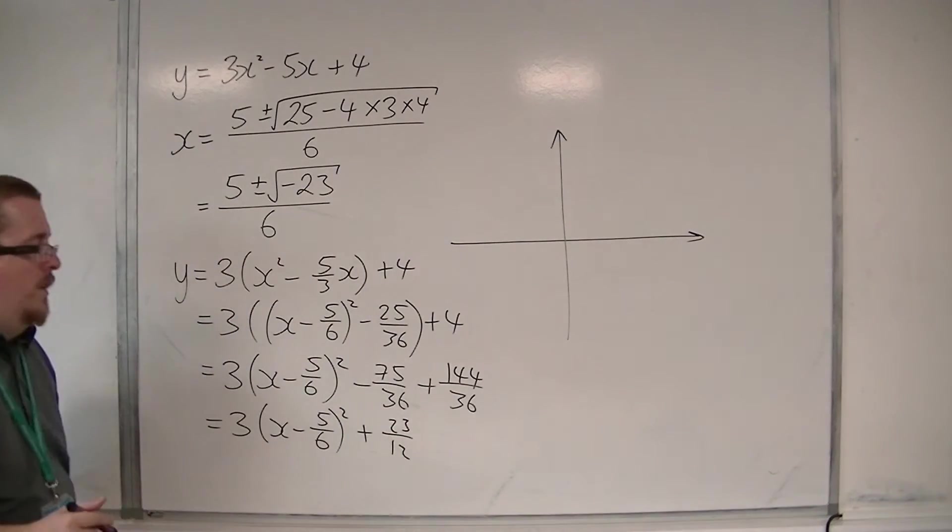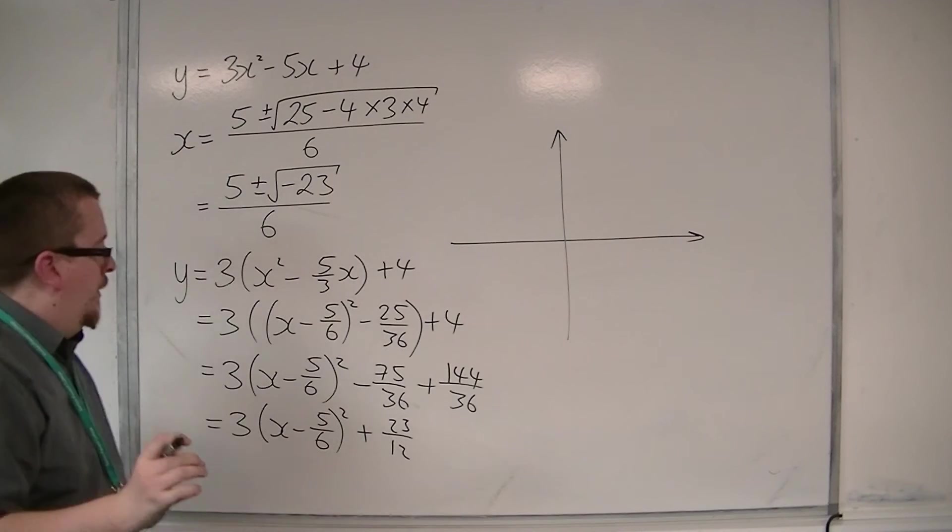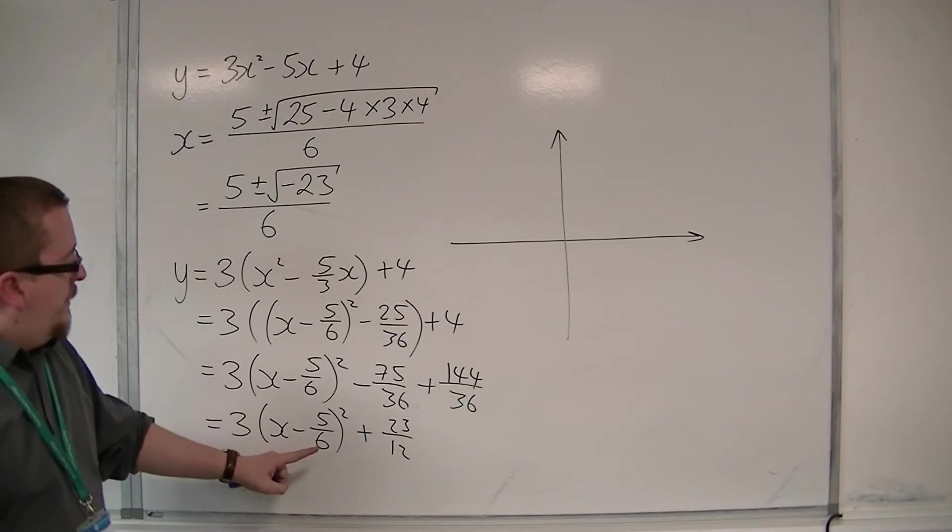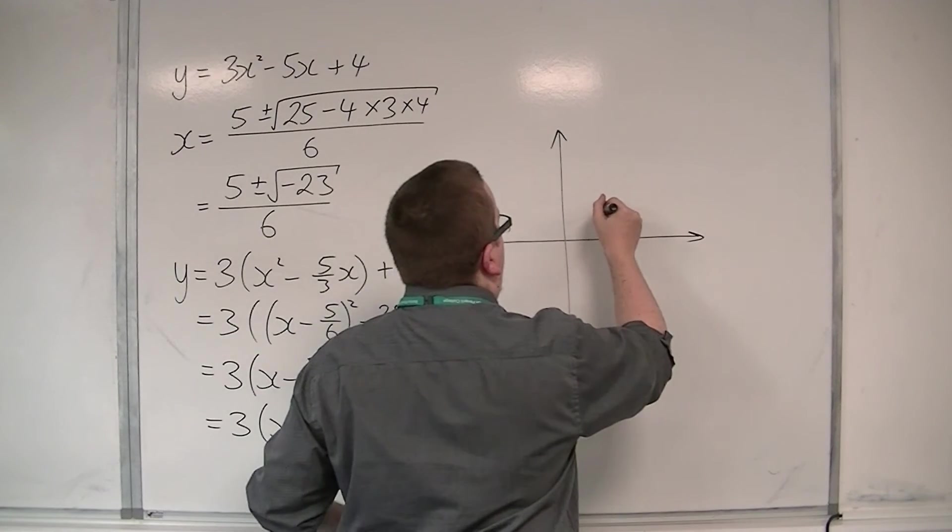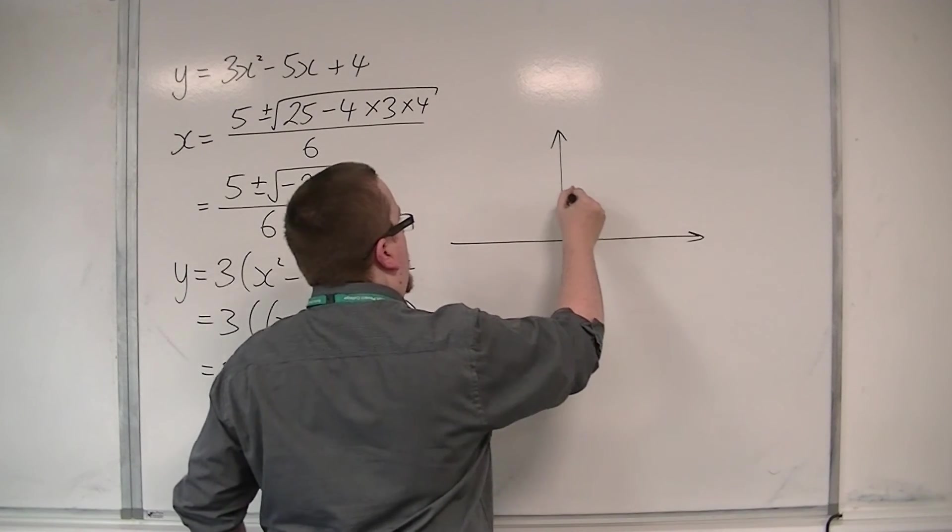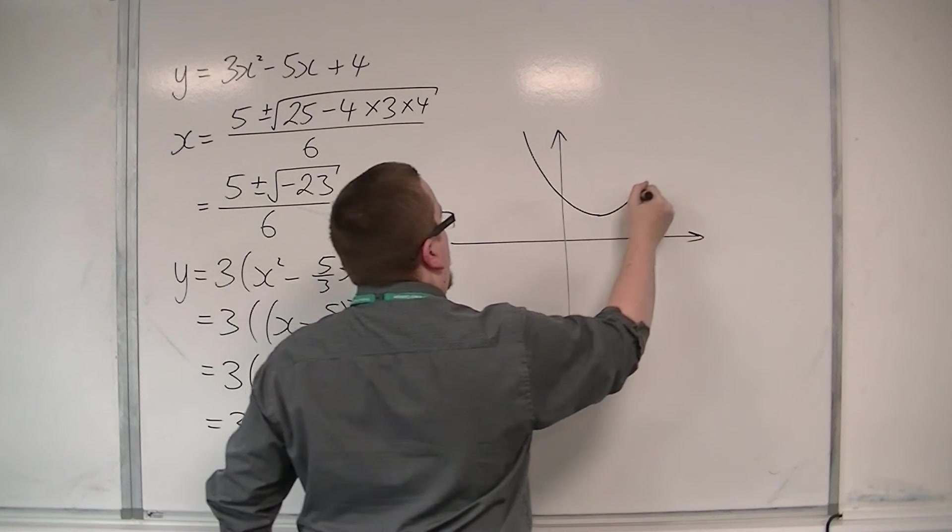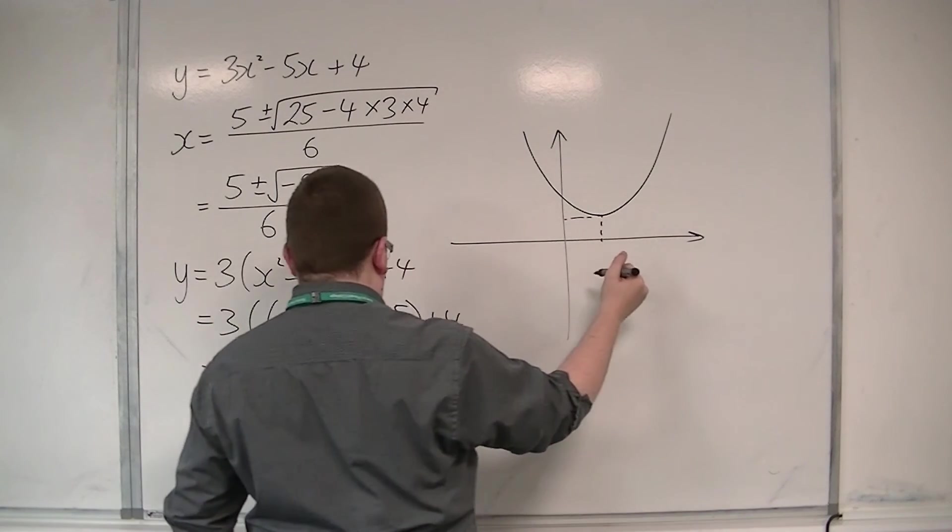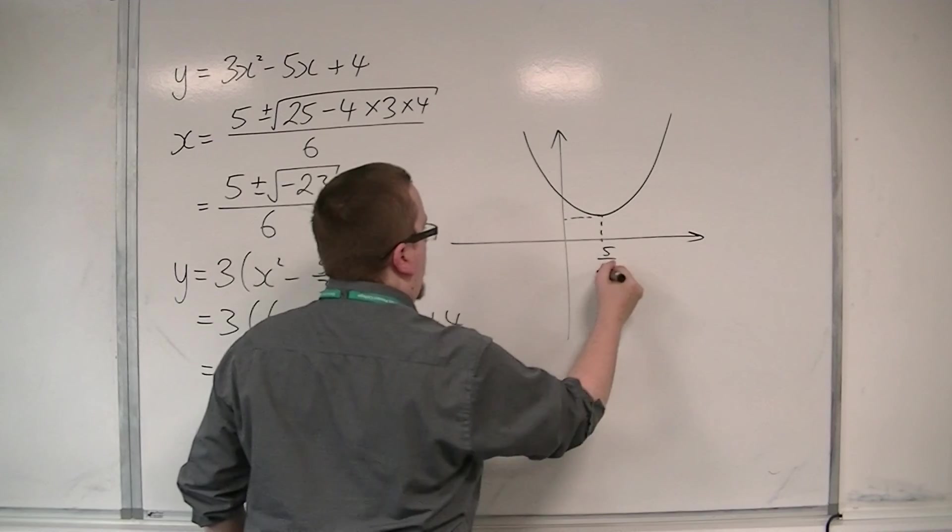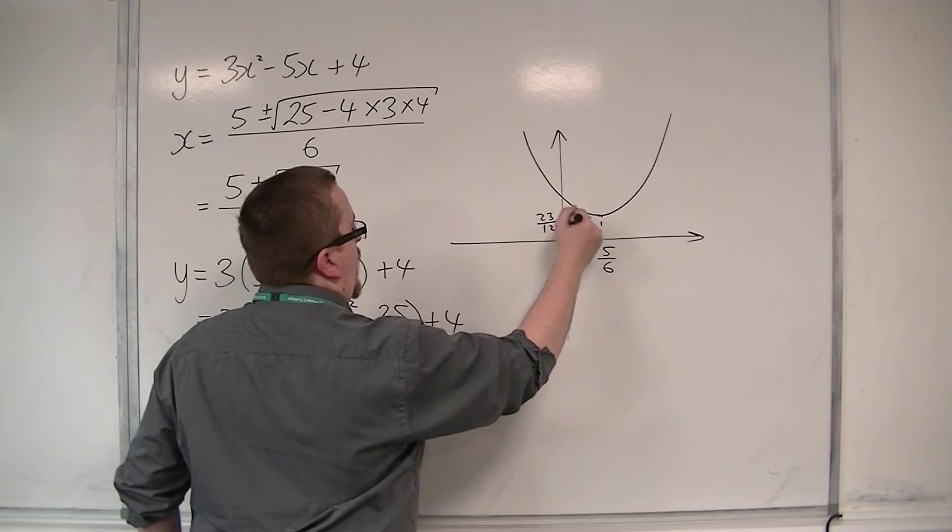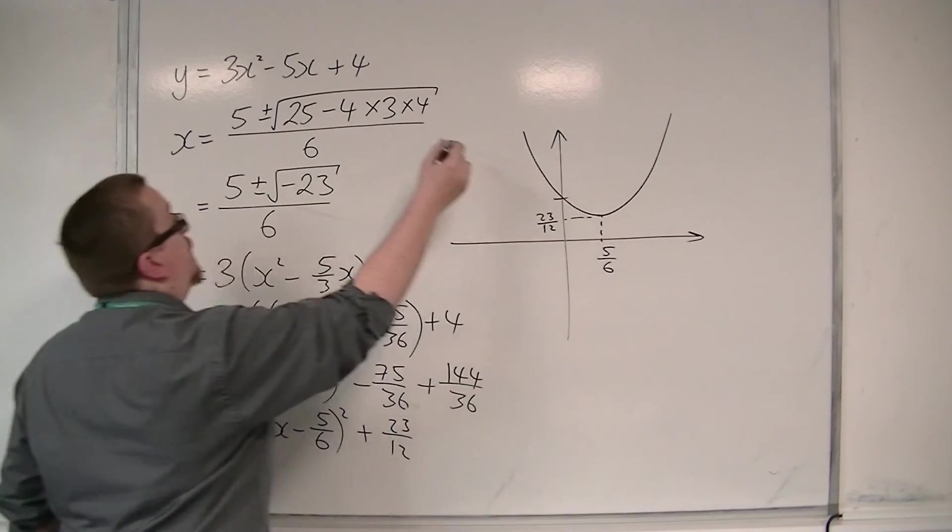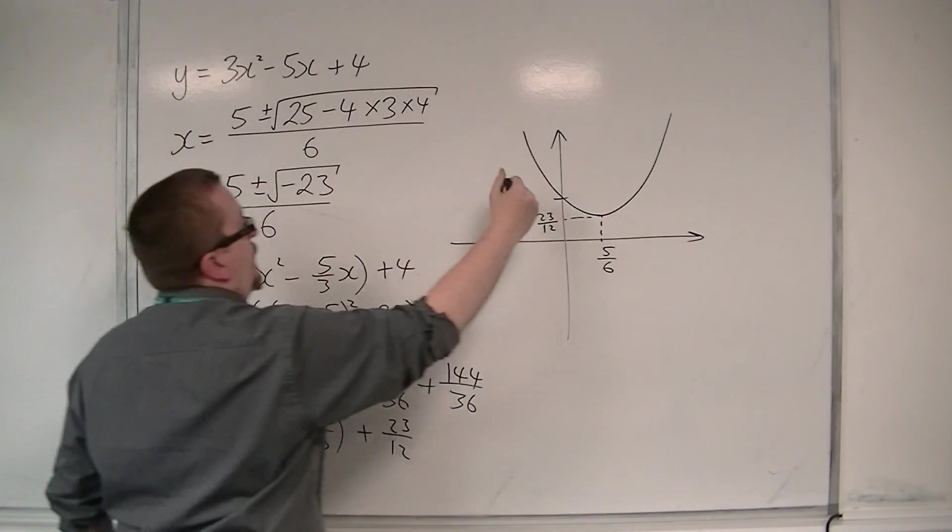And so the coordinates of the vertex is at 5 sixths, 23 twelfths, so somewhere over this side, and so the curve must look something like this. So 5 sixths on the x-axis, 23 twelfths on the y-axis, and we know that it crosses through the y-axis at positive 4.